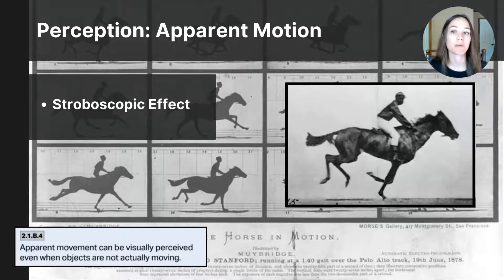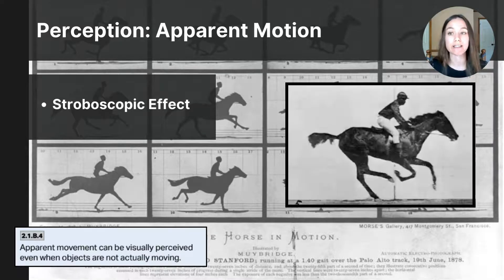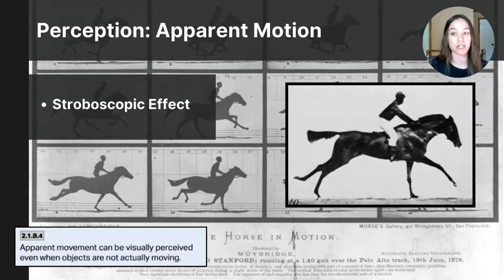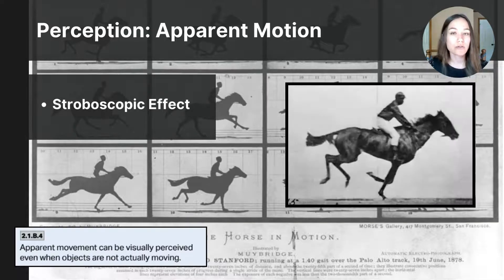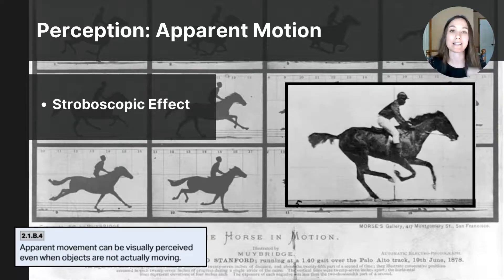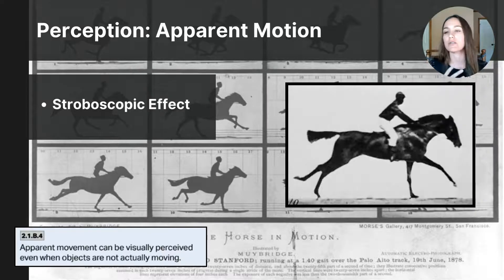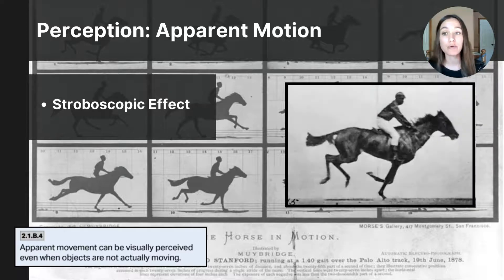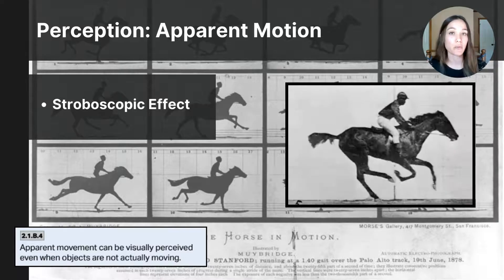Now let's talk about apparent motion. Apparent motion is a fascinating perceptual concept where we perceive movement in a series of still images or in stationary objects due to the way our brain processes visual information. This illusion of motion occurs when our brain interprets a sequence of static images as continuous movement even though the images themselves do not move. Apparent motion is used in animation, movies, signs, and advertisements to create the illusion of movement when there is none.